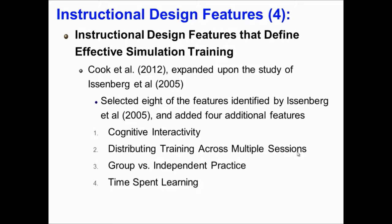A similar review by Cook et al. 2012 expanded upon the study by Eisenberg et al. 2005. Cook et al. selected eight of the features identified by Eisenberg et al. 2005 and added four additional features. Number one: Cognitive interactivity — training that promotes learners' cognitive engagement using strategies such as multiple repetitions, feedback, task variation, or intentional task sequencing.